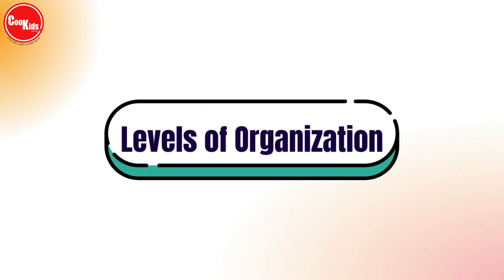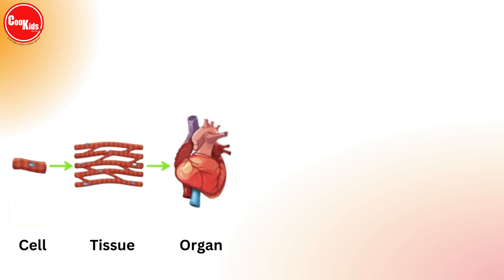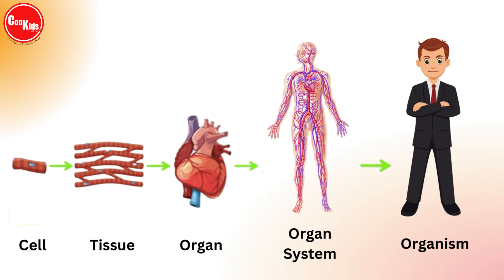Let's learn about the levels of organization. The smallest unit is the cell. Many cells combine together to form tissue. Many tissues combine together to form organs. Many organs combine together to form an organ system. Many organ systems combine together to form an organism.